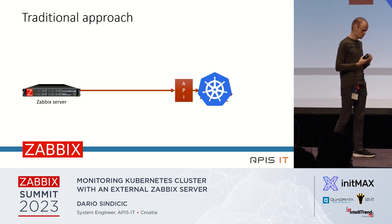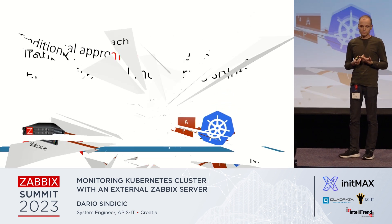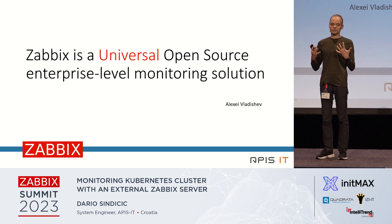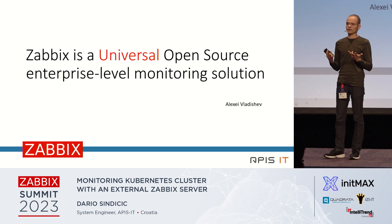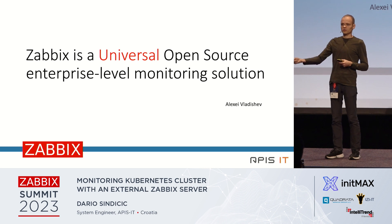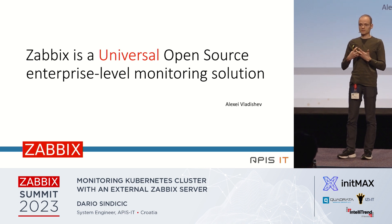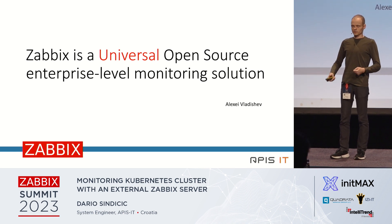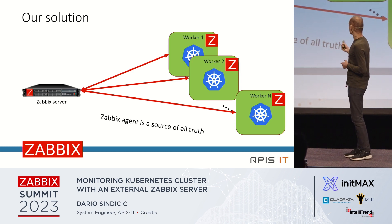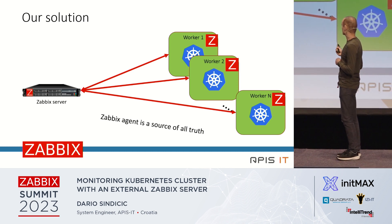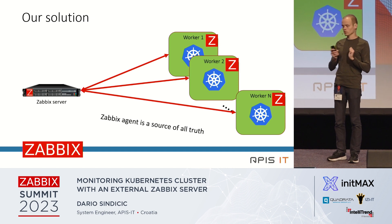But do we really need to do that? As was mentioned, we don't actually — because Zabbix is a universal open-source enterprise-level monitoring system. That means we can do absolutely anything with it, and we don't need to connect to some other monitoring solution to collect data. Zabbix is capable of collecting all the data on its own. Our solution is to deploy a single Zabbix agent on each Kubernetes cluster, and in that scenario the Zabbix agent is the source of all truth — responsible for collecting all information.